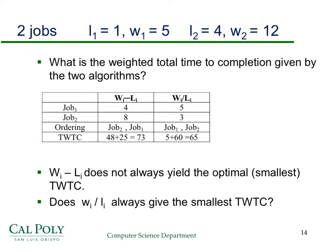If you remember from the last screencast, we went through a number of steps and the final step got us to two candidates for potentially ordering the jobs and hopefully minimizing the total weighted time to completion. One was the difference between the weights and the lengths, ordering them in decreasing order of that, and the other was to order them in decreasing order of their weight-to-length ratio. When we tried both of those out on a simple example, we found that the total weighted time to completion of the ratio ordering was better than that of the difference ordering.